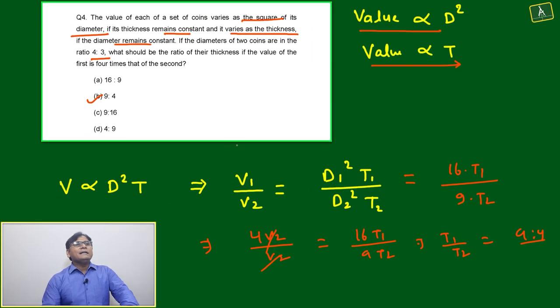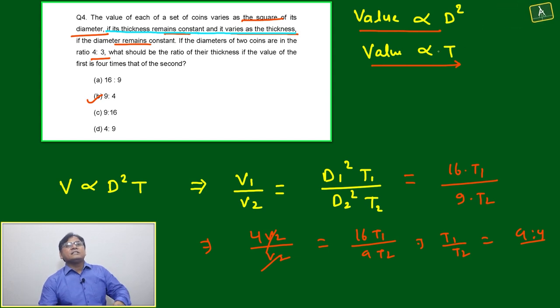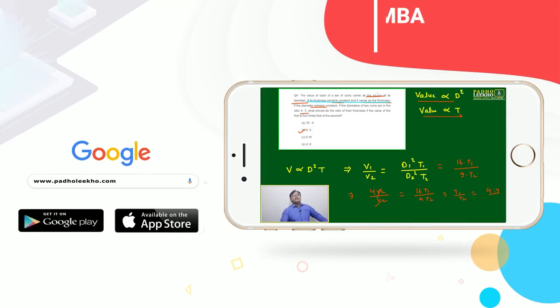I think it's an easy question, not much. The only confusion was this line: if its thickness remains constant and it varies as thickness. We have to just guess it is directly proportional to thickness, not in a square format. Here it is given clearly in square format for diameter. These two we have to analyze if the diameter remains constant.